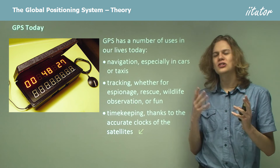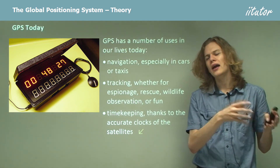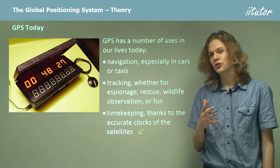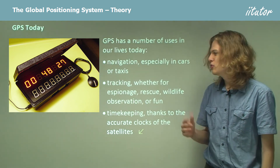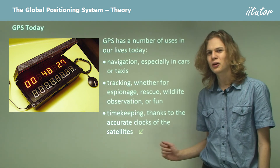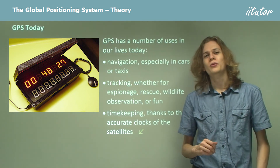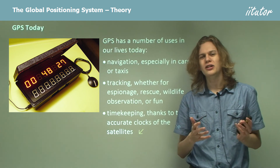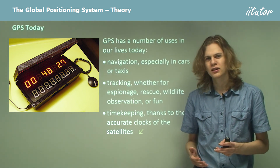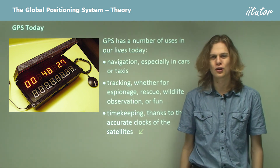We call it the global positioning system for a reason — it's built to locate things on the surface of the earth. However, because the clocks on board are so accurate, we don't need to use it only for positioning; we can use it for timekeeping as well. So that's the end of the theory. We've learned about how the GPS system works and exactly how it uses trilateration to narrow down where you are on the surface of the earth.